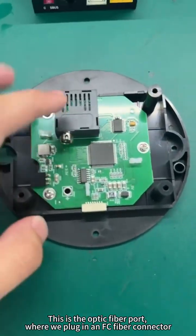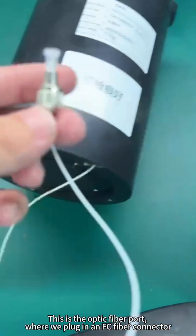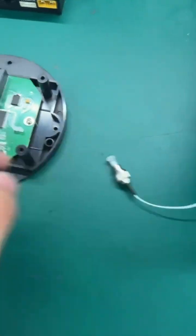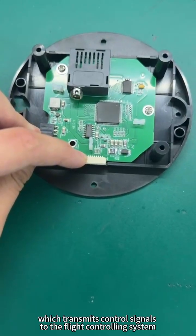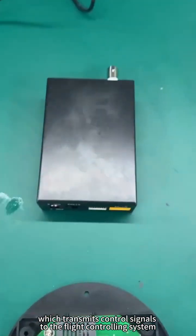This is the optic fiber port where we plug in an FC fiber connector. And this is the TTL interface which transmits control signals to the flight controlling system.